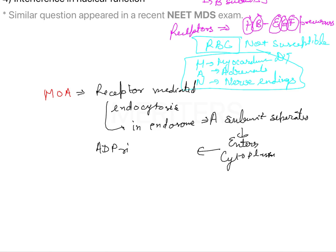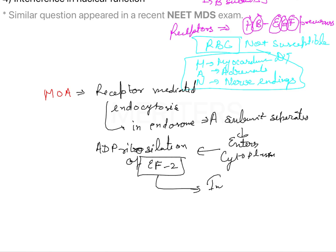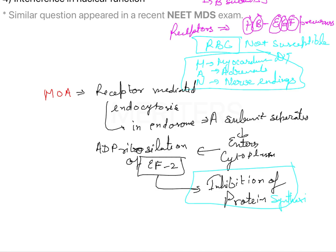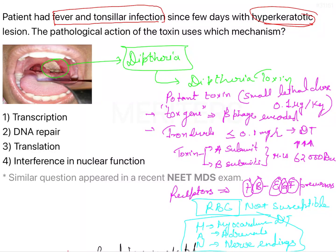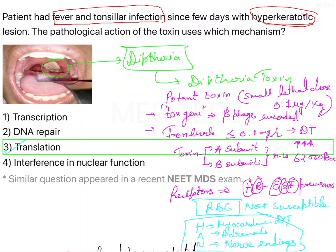After entering the cytoplasm, there is ADP ribosylation of EF-2 (elongation factor 2). This ribosylation leads to inhibition of protein synthesis — it inhibits translation. The process of forming protein from ribosomes is called translation, and this toxin inhibits it. So the answer to this question is option 3: inhibition of translation by the diphtheria toxin.